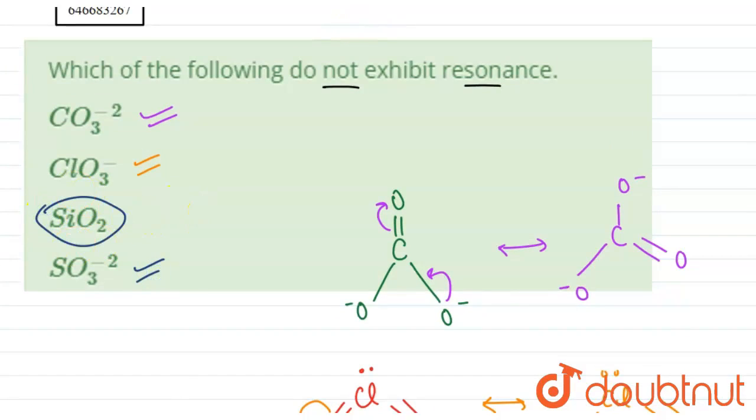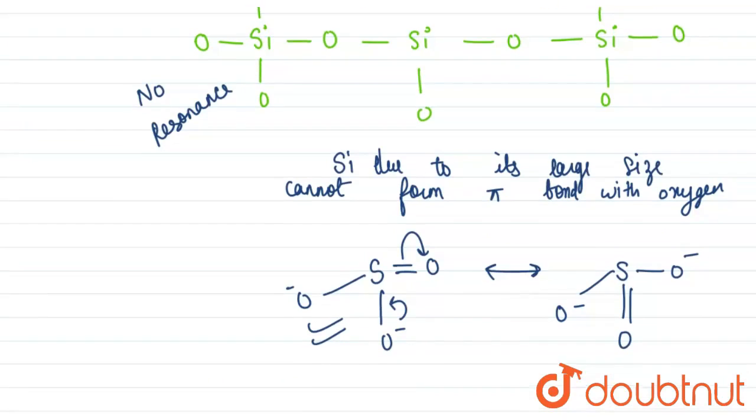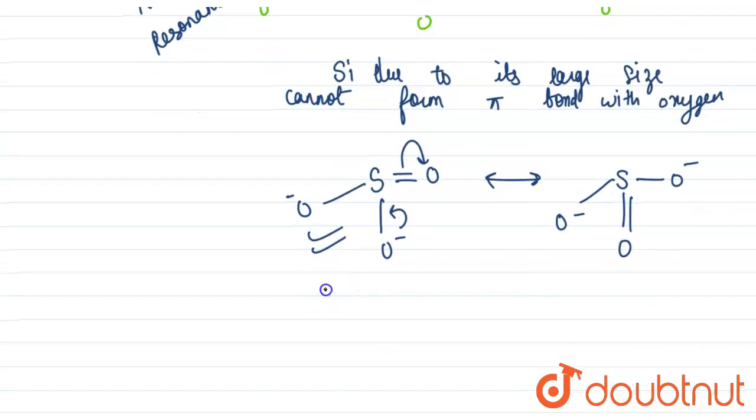So only our SiO2 does not exhibit resonance, so it is our answer, which is in option number C. So our answer for the given question is option number C.